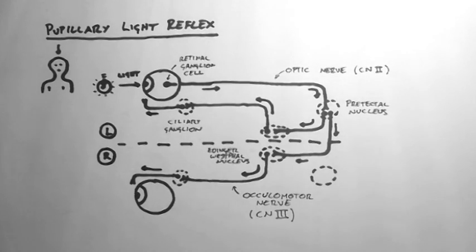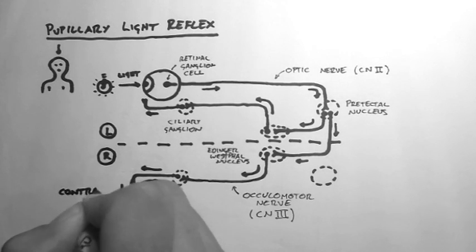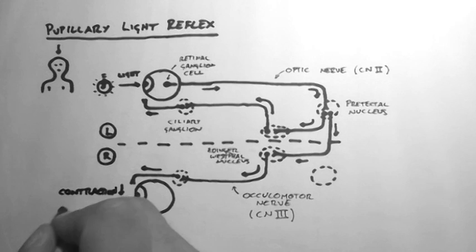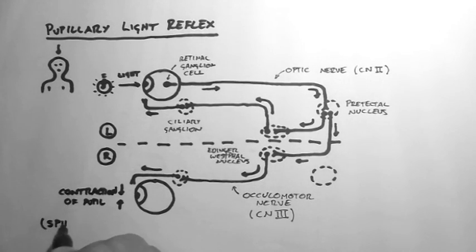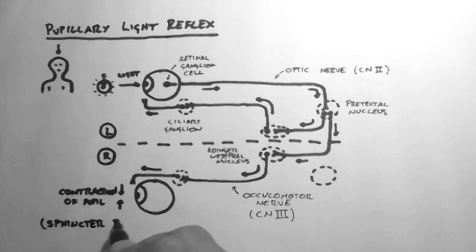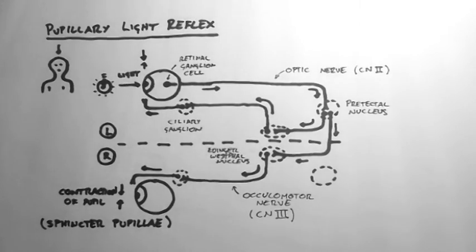When the ciliary ganglia innervate the muscles around the pupil, they cause contraction of the pupil. The muscle that does this is called sphincter pupillae. It also causes contraction on the opposite side. So shining light in one eye causes contraction of the pupil in both eyes, if this reflex is working properly.